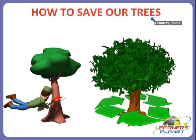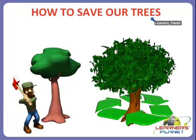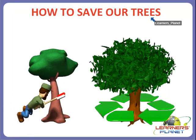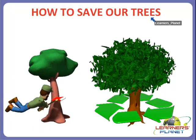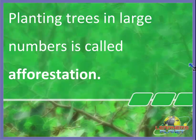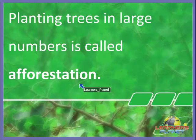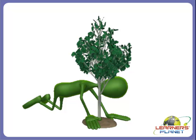Why? Because as we saw before, we need trees to reduce soil erosion, for rain, and also for the oxygen gas which we breathe in. We can say that planting trees in large numbers is called afforestation. So, cutting down of trees in large numbers is called deforestation, and planting trees in large numbers is called afforestation. This is the main difference between afforestation and deforestation. You should plant trees and not cut down trees in large numbers. Always remember that each one of us should plant at least one tree.